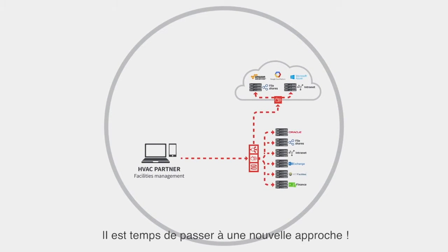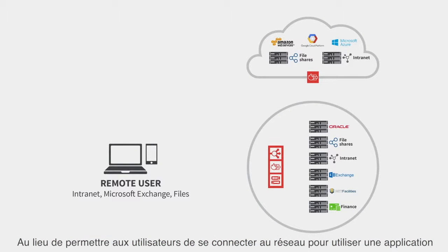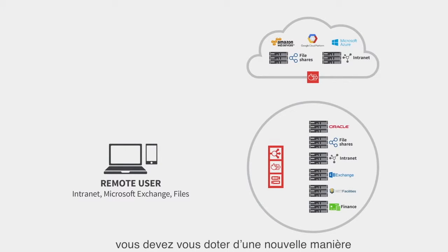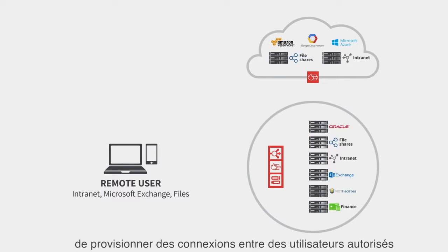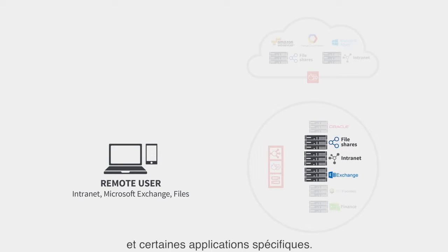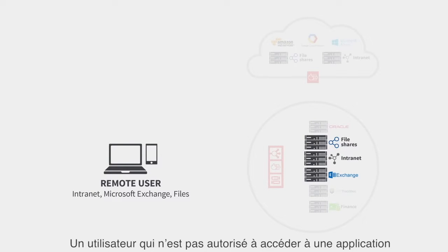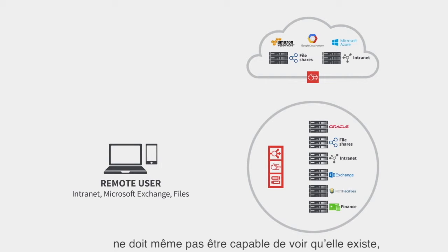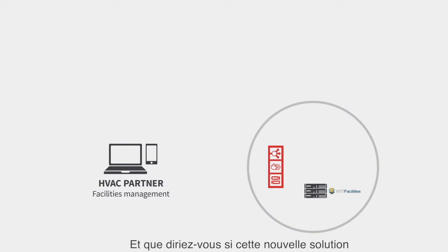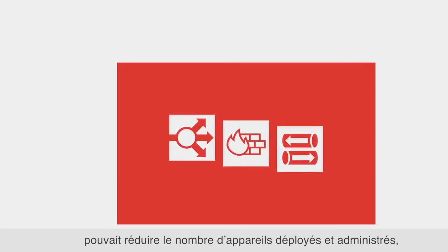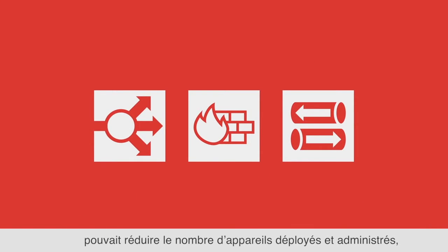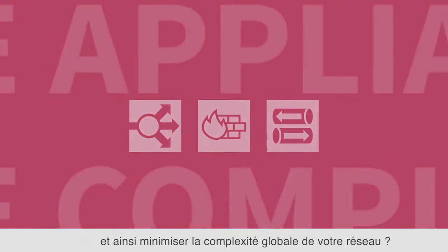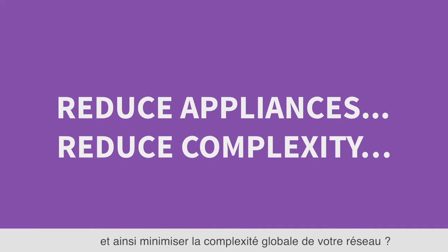It's time for something new. Rather than giving users network access to get to an application, you need a new way to provision connections between authorized users and specific applications. If a user is not authorized to get to an application, they shouldn't even be able to see that it exists, much less get to it. It would also be great if this new solution could reduce the number of appliances that have to be deployed and maintained, as well as reduce the overall complexity of your network.